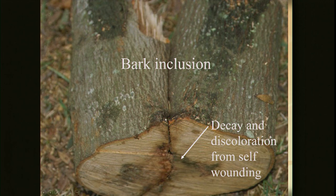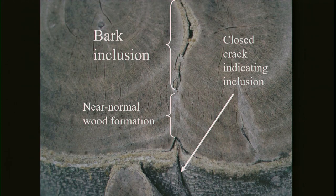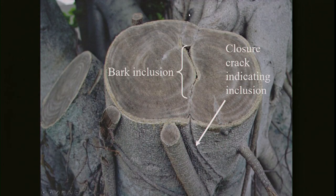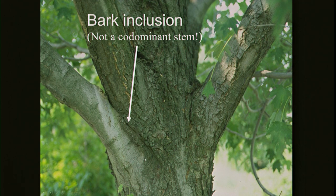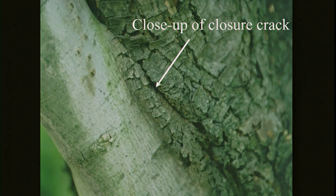Why are codominant stems a problem? You can already see the gap — someone took a knife, removed part of the bark, and there's already a hollow gap forming inside that will only get bigger until it fails. This is a better picture of included bark with visible decay from water and microorganisms. And here — these were two codominant stems now fused into one solid trunk, but you can see the included bark right in between. If this fails, it'll fail right along that seam — that's called a closure crack. If you see a closure crack on your tree, it means it has included bark inside, even if it looks like one trunk.